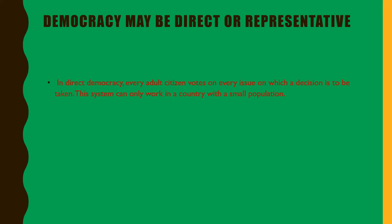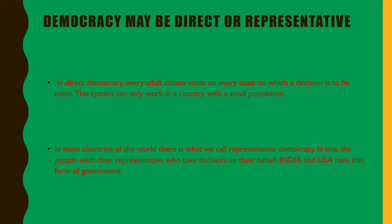In direct democracy, every adult citizen votes on every issue on which a decision is to be taken. This system can only work in a country with a small population. In most countries of the world, there is what we call representative democracy. In this, the people elect their representatives who take decisions on their behalf. India and USA have this form of government.